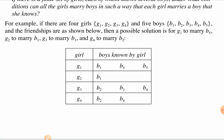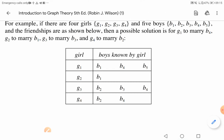The friendships are shown in a table. g1 knows b1, b4, and b5. g2 only knows b1. g3 knows b2, b3, and b5. g4 knows b2 and b4. So b5 is known by both g1 and g3.